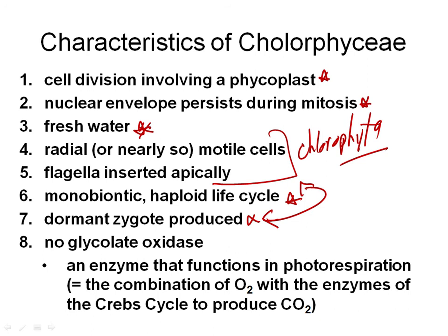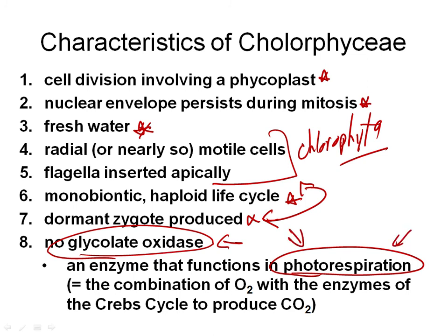Also very characteristic of the Chlorophyceae is something it lacks — the enzyme glycolate oxidase. This enzyme occurs in all higher plants and in the Charophyceae, the class most closely related to higher plants. It functions in photorespiration, which involves oxygen combining with enzymes of the Krebs cycle via glycolate oxidase to produce CO2 — an inefficient process that happens in higher plants.